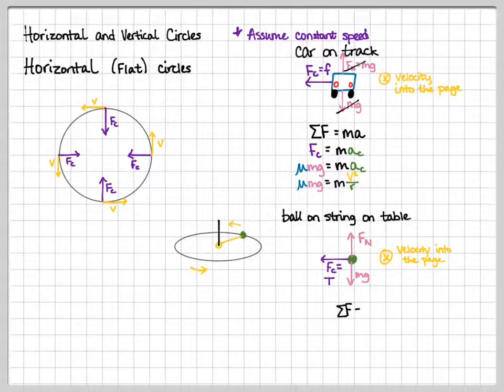Once again, we'll do the sum of our forces. Tension is the only force acting in the x. So tension is equal to mv squared over r. We'll just ask you to find the tension in the string on that one and maybe how fast it goes. That's about it for horizontal circles.